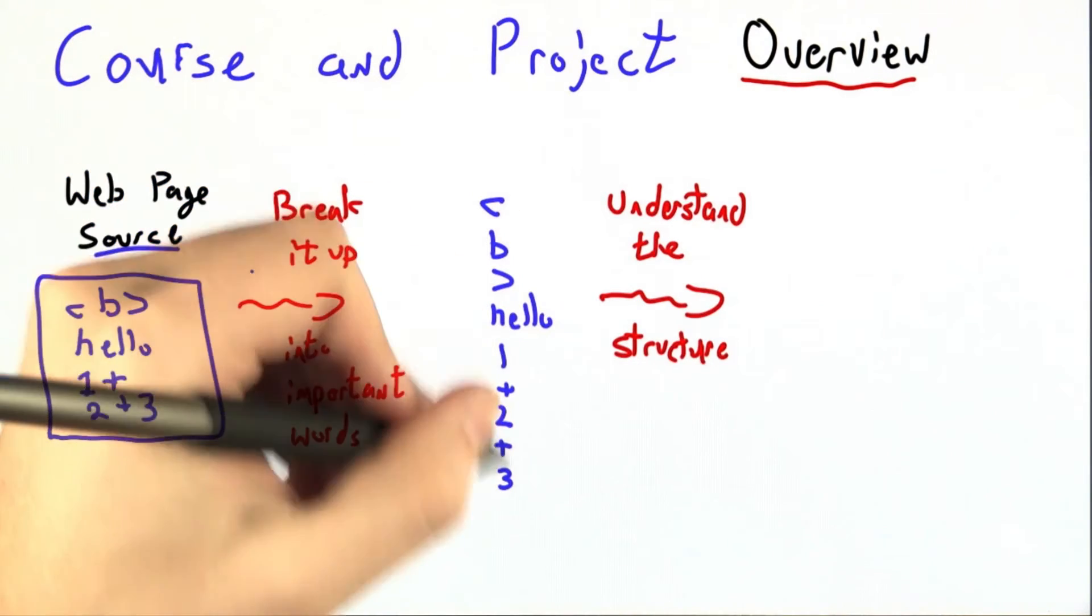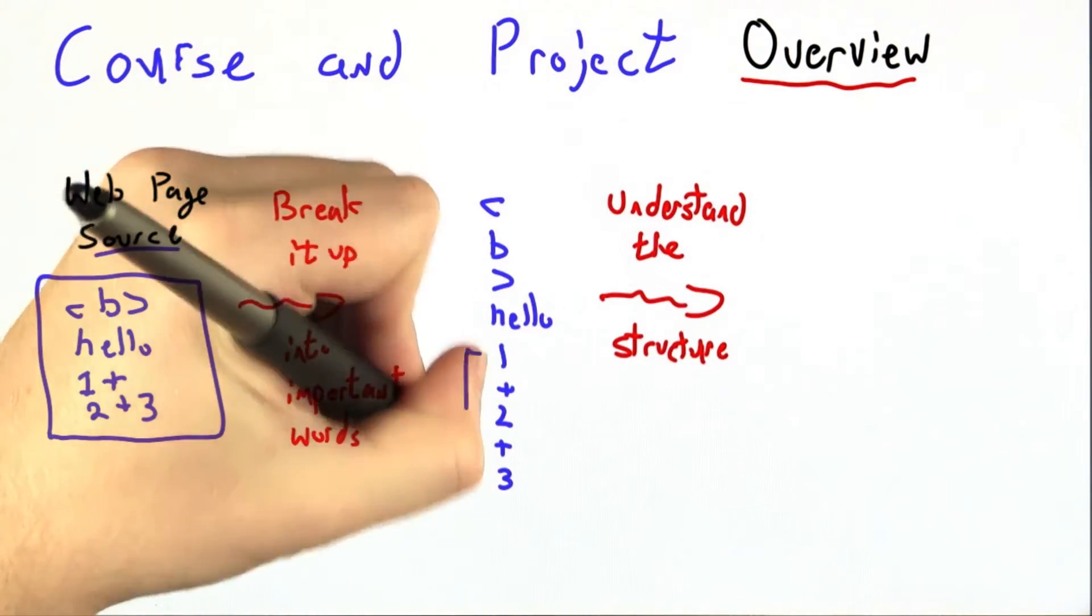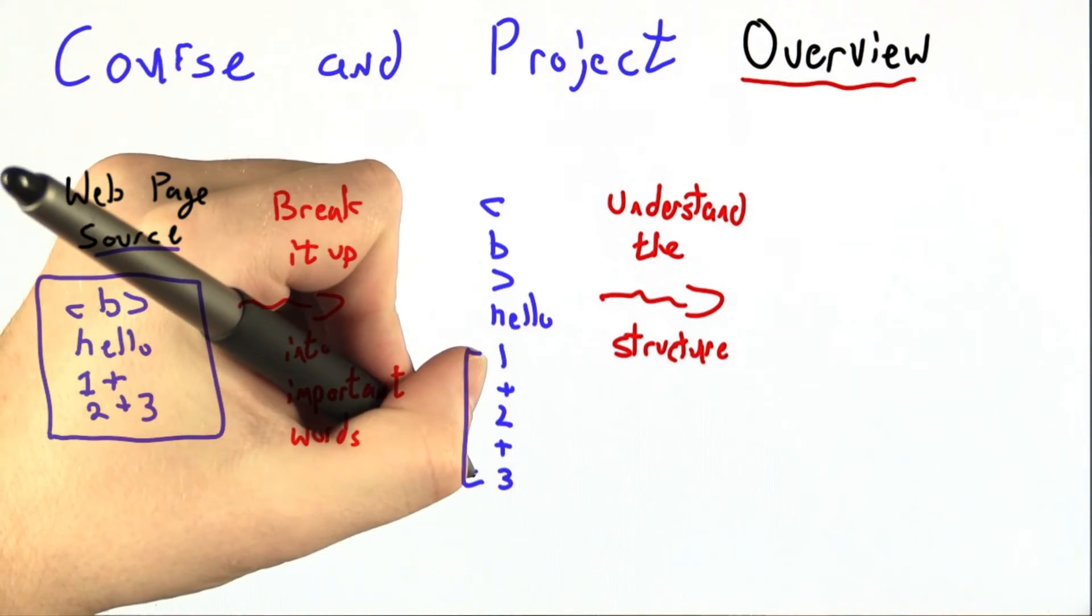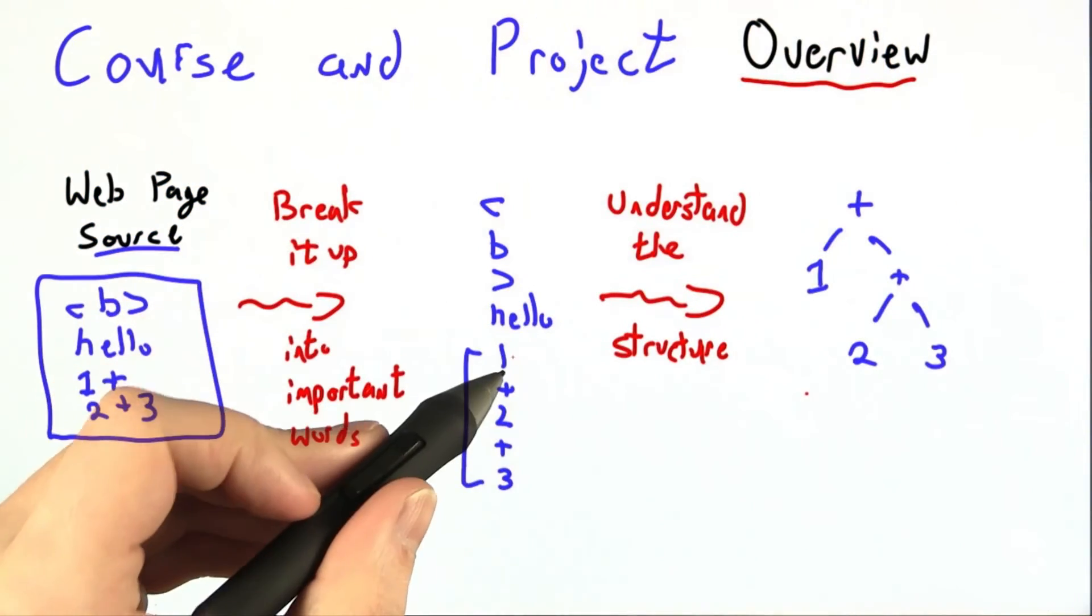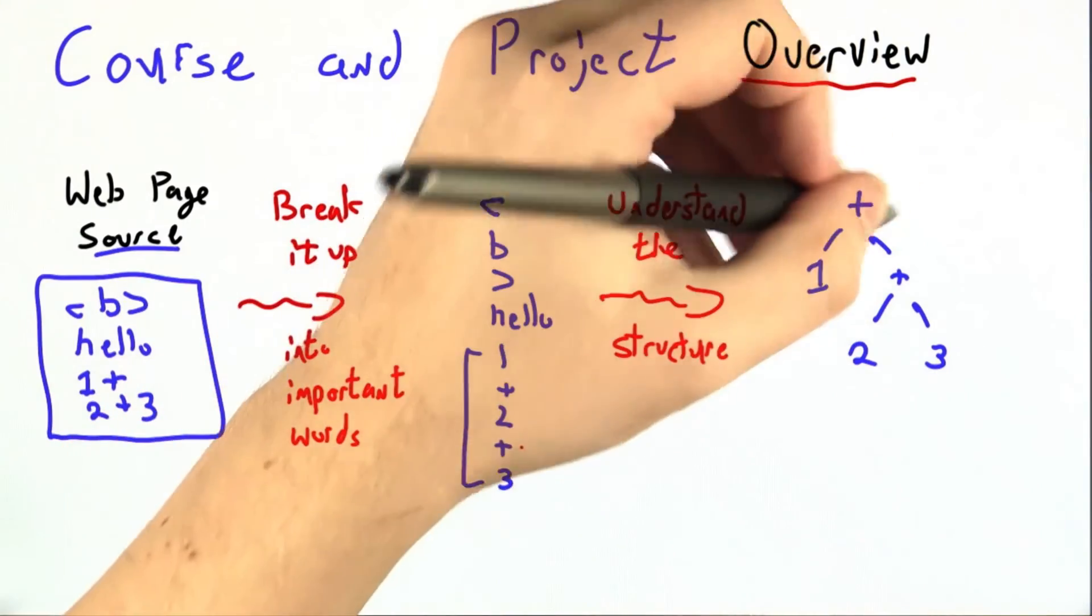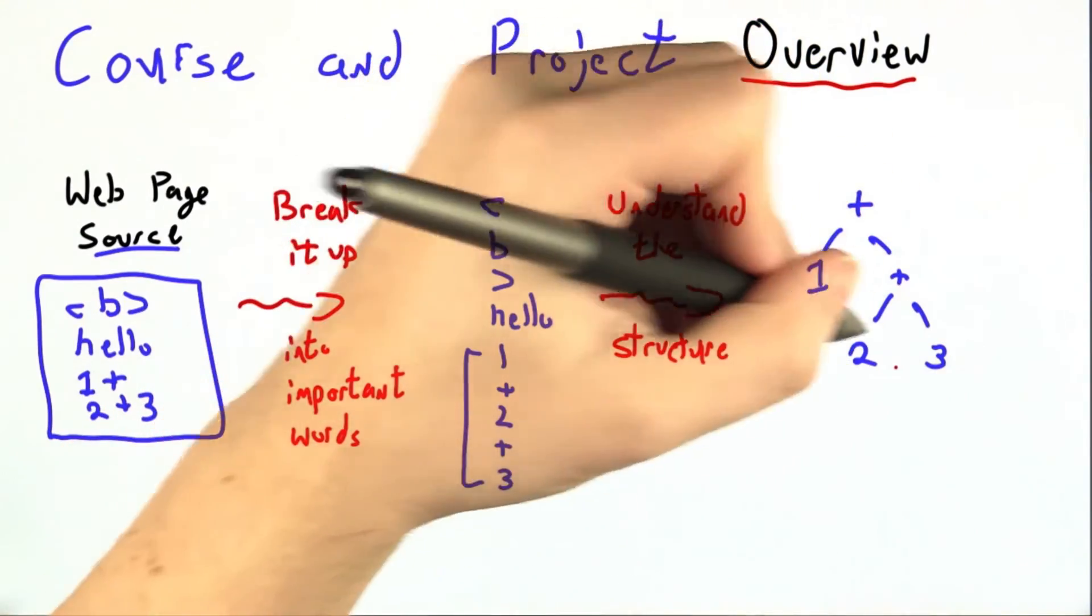Then we'll understand the structure of the words that we found. For example, focusing on this part down here, it may be easier to understand 1 plus 2 plus 3 as a tree showing all of the computations.